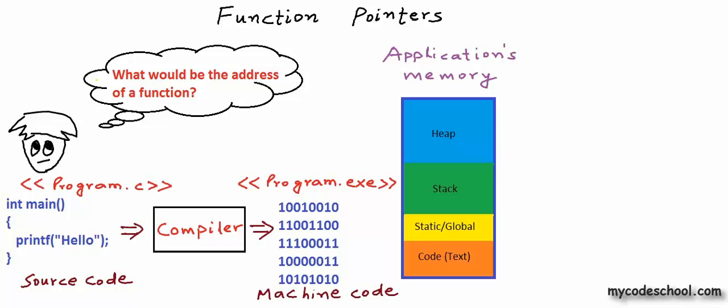A program or application gets a chunk of memory only when it starts execution. When the application finishes execution, this memory is claimed back. When a program starts execution, some amount of memory is allocated to it — that is what we are calling the application's memory. The code or text segment of application's memory is basically the machine code or instructions copied from the executable file. Instructions are not executed directly from secondary storage; they are first copied to main memory and then only they can be executed. During program execution we need memory not just to store instructions, but also to store a lot of data. These other segments are mostly about storing and managing data.